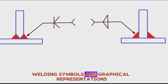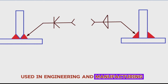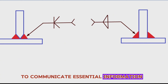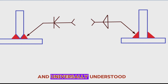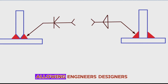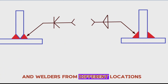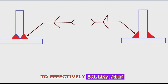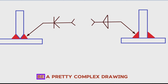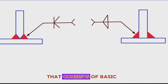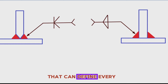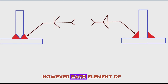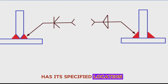Welding symbols are graphical representations used in engineering and manufacturing to communicate essential information about welds and welding processes. These symbols are standardized and universally understood, allowing engineers, designers, and welders from different locations to effectively understand weld joints. A welding symbol can be a pretty complex drawing that consists of basic weld symbols and supplementary symbols, numbers, and letters that can define every single aspect of a specified weld. Each element of the welding symbol has its specified location and meaning.